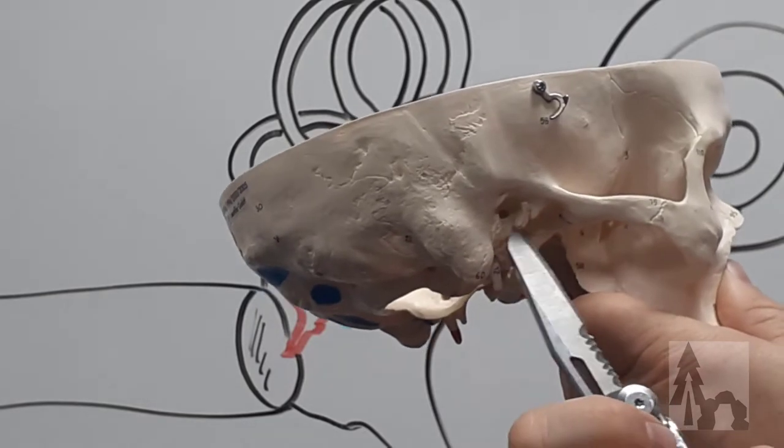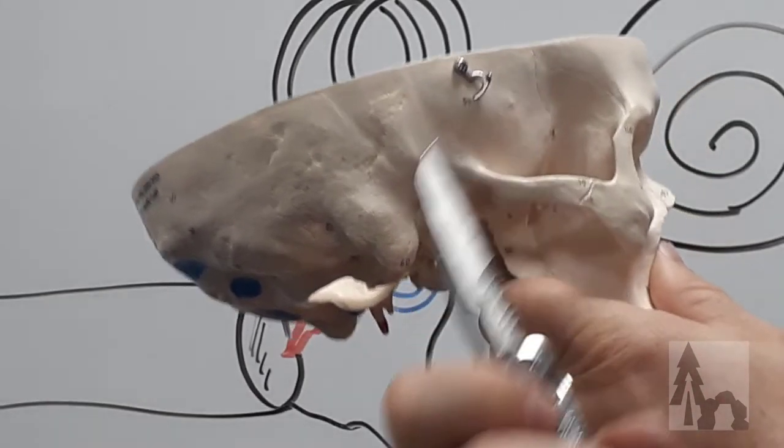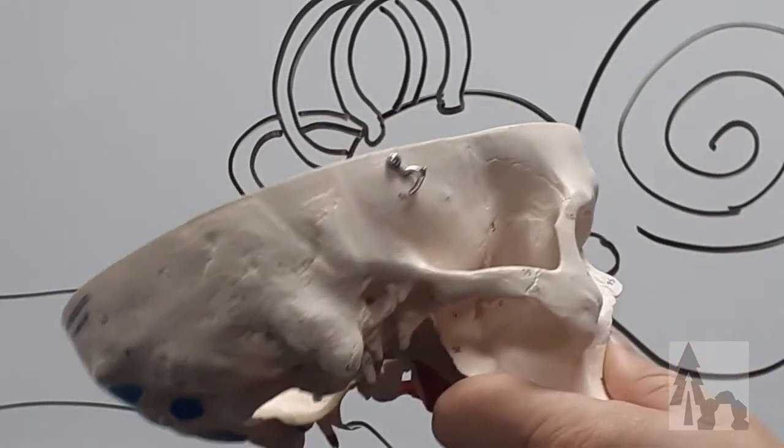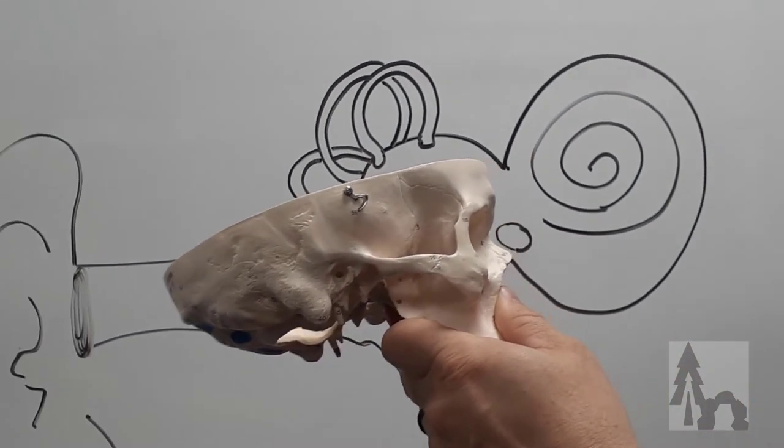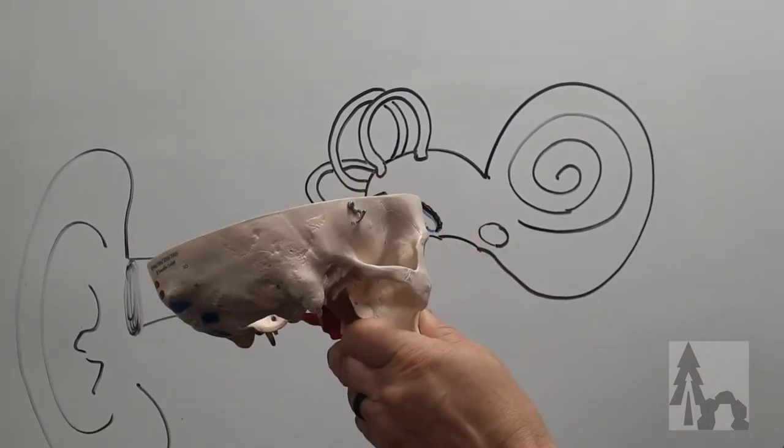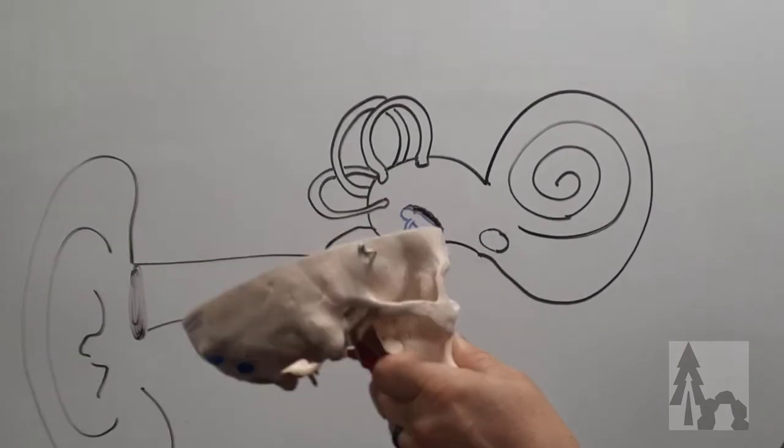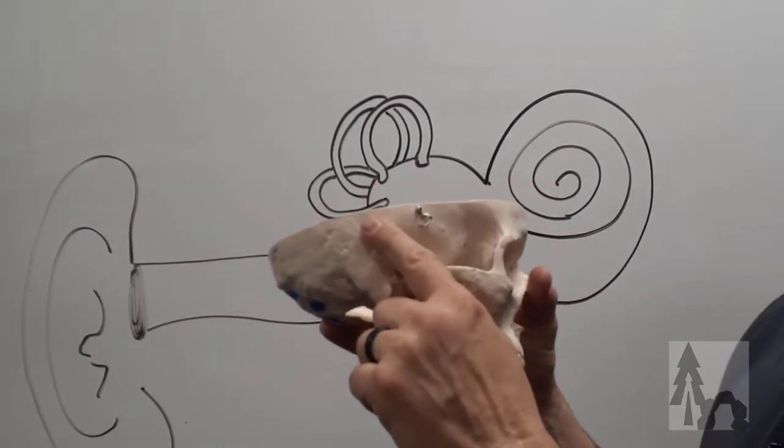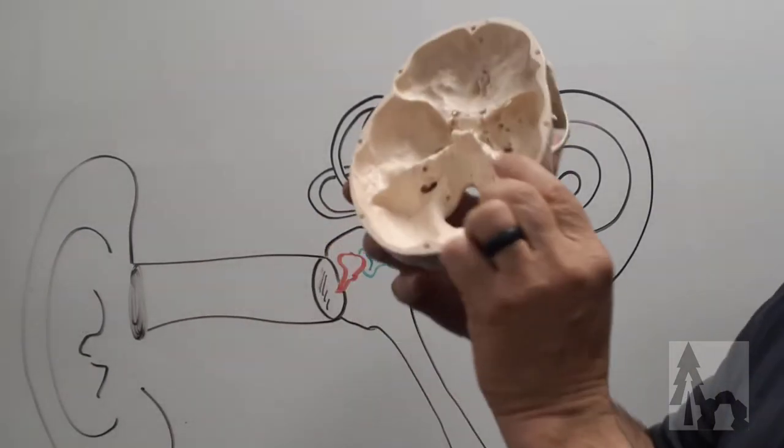The little ear hole right there. So on the side of your head, this is where that cartilaginous flap, the pina, would be your ear auricle. Inside the skull, there's a squamous portion of the temporal bone.